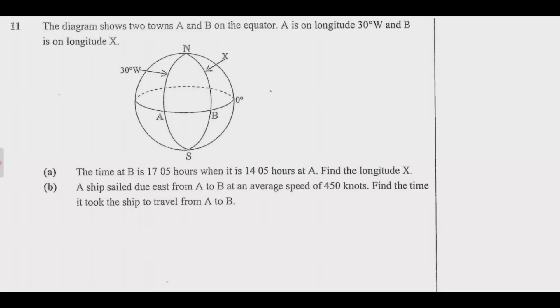Let us look at question 11. The diagram shows two towns A and B on the equator. A is on longitude 30 degrees west and B is on longitude X. You can see the diagram there. The time at B is 17:05 hours when it is 14:05 hours at A. Find the longitude X. The question is asking us to find the value of X, what is this longitude.